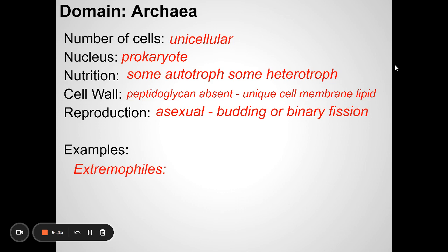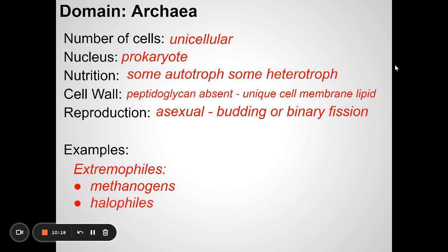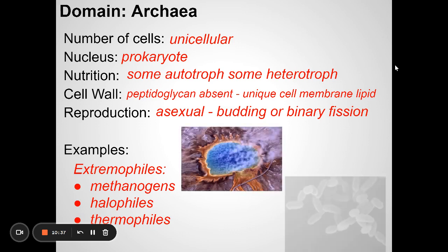Archaea include things called extremophiles. Scientists first discovered archaea living in very extreme conditions where they thought probably nothing could survive. They can live in deep-sea vents where chemicals come out of the interior of the earth, in the saltiest conditions where nothing else can live, or in very hot conditions like geysers. That's where this group was discovered — living in these extreme conditions.